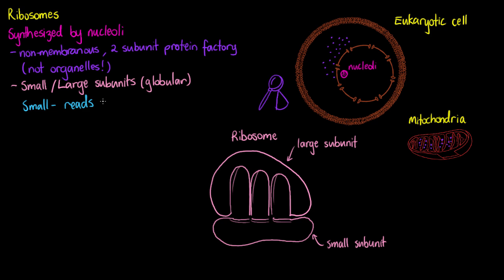So our small subunit. It's going to have a role in reading RNA. Now RNA being the strand of genetic material that's going to carry the code for the proteins that we need to make in our cell during translation. And the RNA is going to be composed of a long chain of nucleotides.